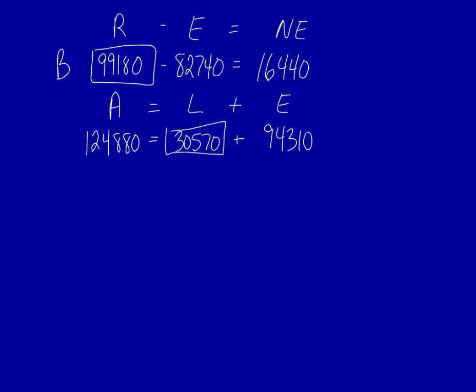First we would look at the statement of earnings of the two companies. Company B has net earnings of 16,440. If we calculate this as a percentage of the total revenues by dividing 16,440 by the amount of revenue, 99,180, we find out that their profit margin is 16.6%, which is excellent. This means that for every dollar of revenue, the company is keeping 16.6 cents in their own pocket.